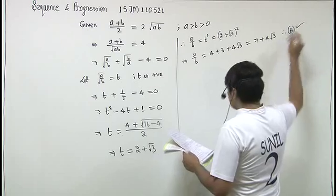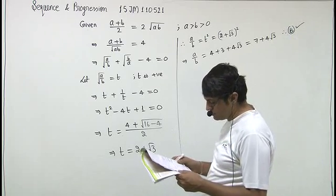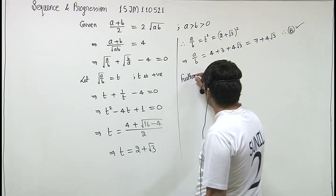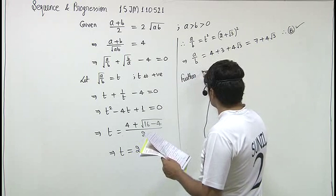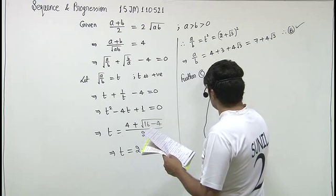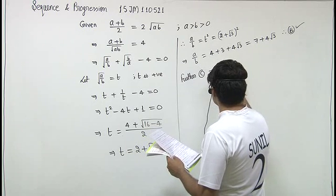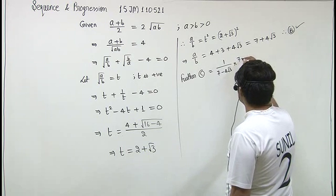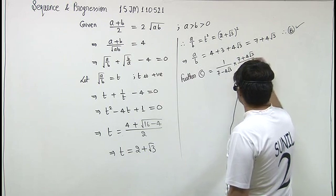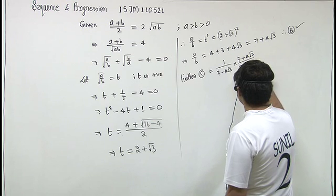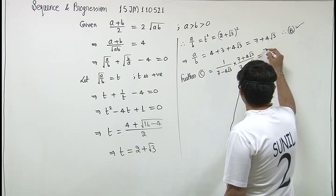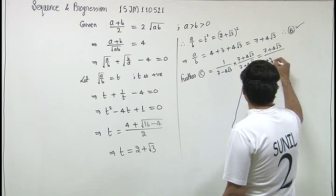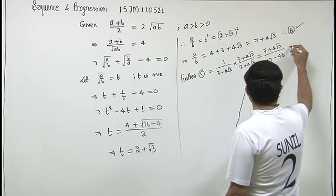That means B is the correct answer, but it is a multiple choice, so we have to check other options also. So option C is given to be 1 upon 7 minus 4 root 3. If I rationalize it, we have 7 plus 4 root 3 upon 49 minus 48. That means C is also correct.